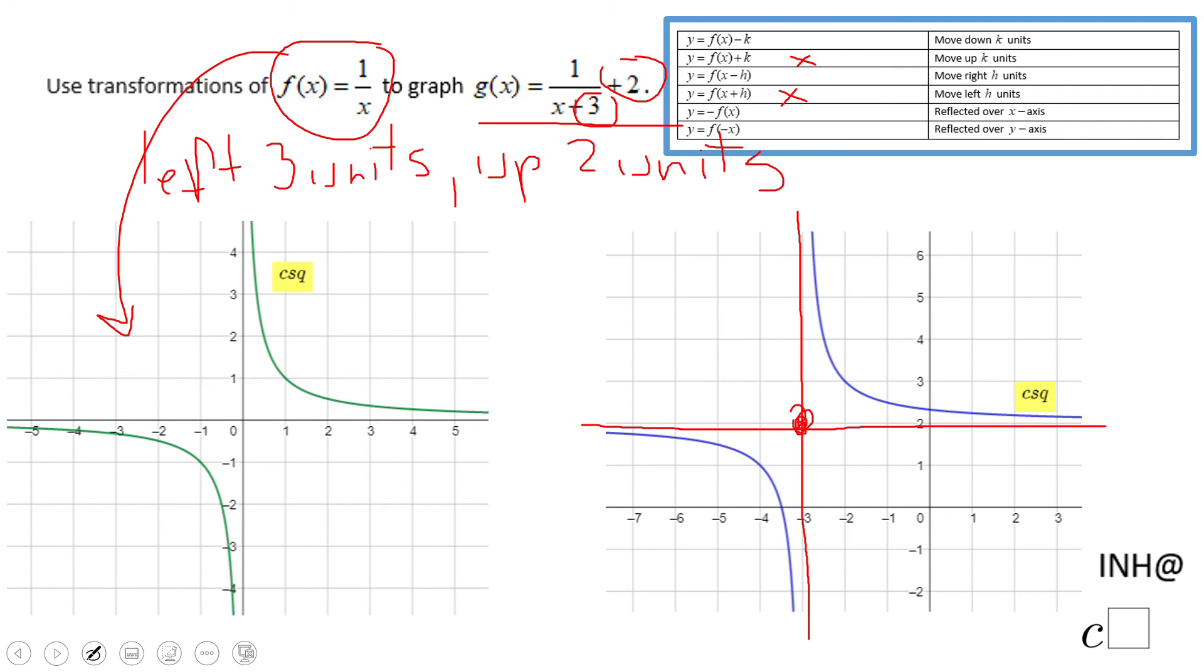And this is the intersection point. That is another way to think about rational functions.